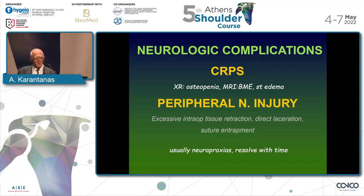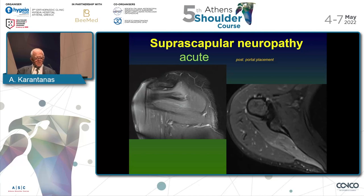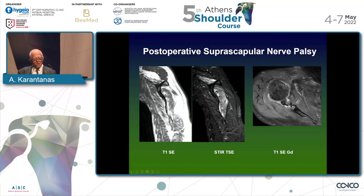Neurologic complications are also rare. CRPS or pseudo-algodystrophy is very rare in the shoulder, though we usually see bone marrow edema with soft tissue edema and osteopenia in the foot or ankle. Peripheral nerve injury may occur, usually transient and not permanent. In the acute setting, edema in the teres minor and infraspinatus muscle can be nicely demonstrated on axial images — this was due to posterior portal placement. In the most significant case, supraspinatus, infraspinatus, and teres minor all show edema on fat suppression images, with the metallic device displaced into the notch very close to the suprascapular nerve.